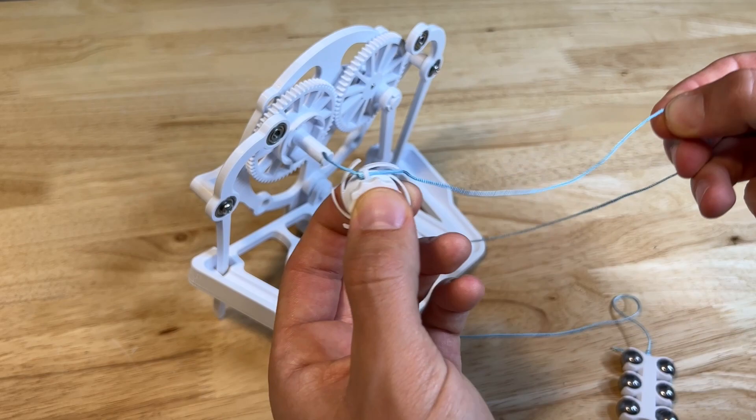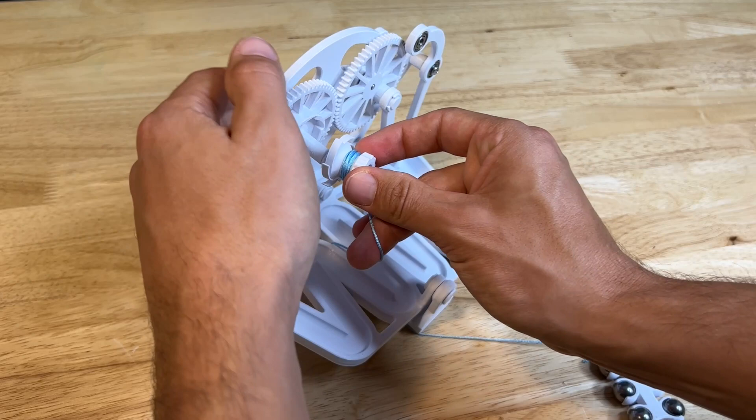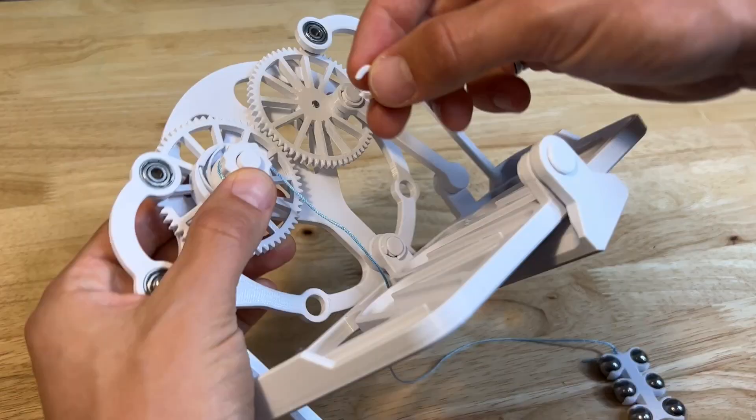Wrap the string around the spool just to make life a little bit easier, and then that will slide onto the post on the big gear. Throw a C-clamp to hold that in place.